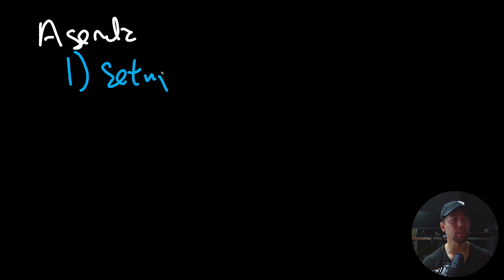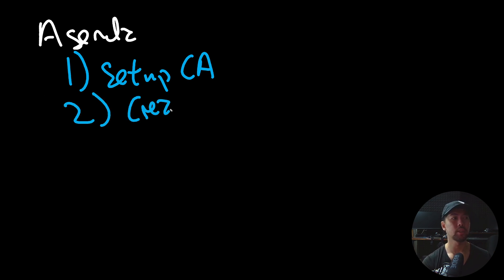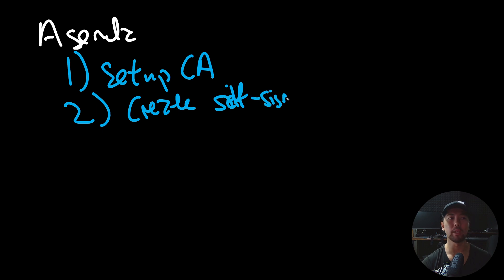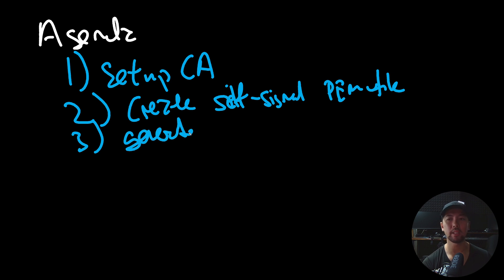This is going to be the agenda for today. Number one, we're going to set up our certificate authority by generating a key pair with OpenSSL. Number two, we create a self-signed PEM file, which will be uploaded into AWS IAM Roles Anywhere. Number three, we will generate the client key as well as the client signing request file.